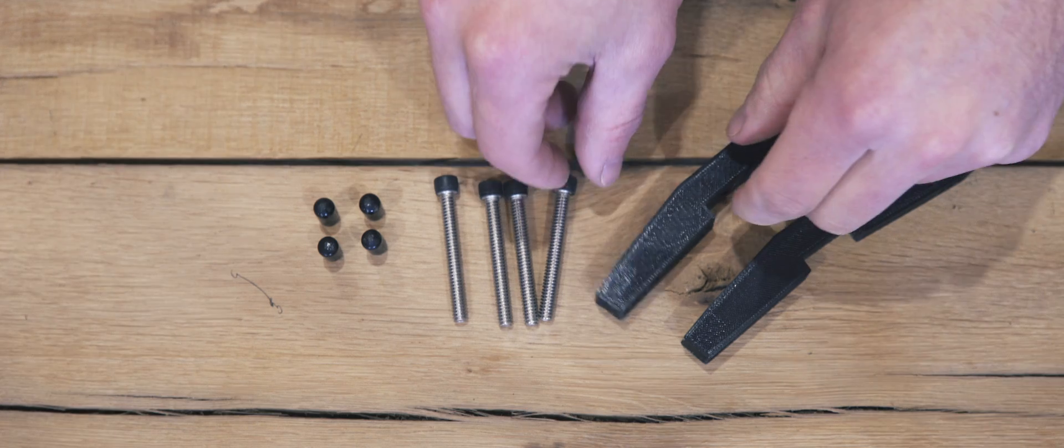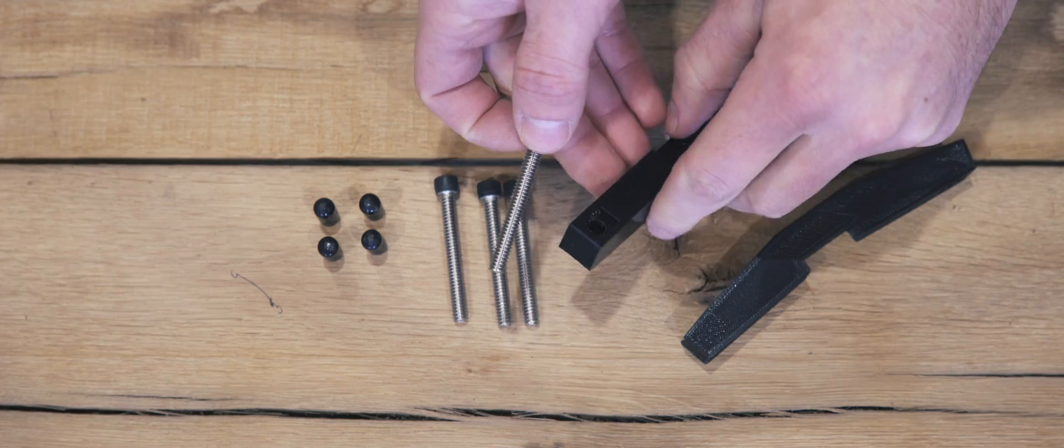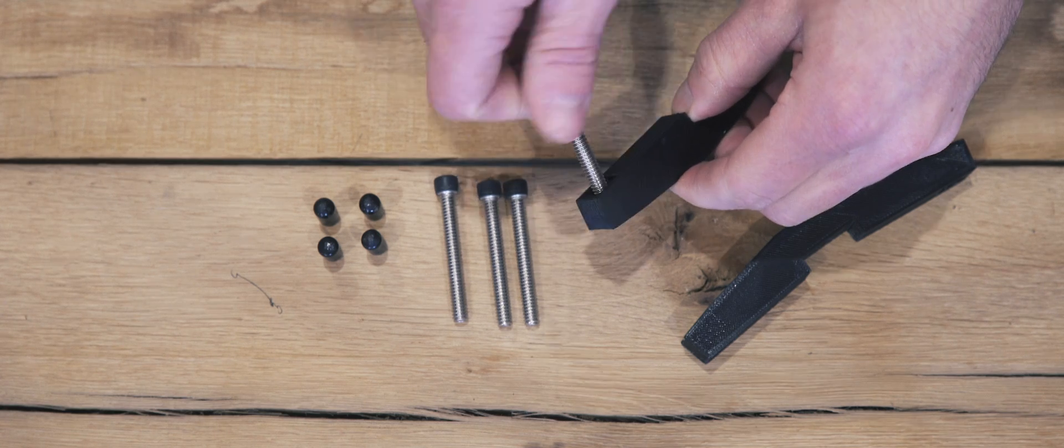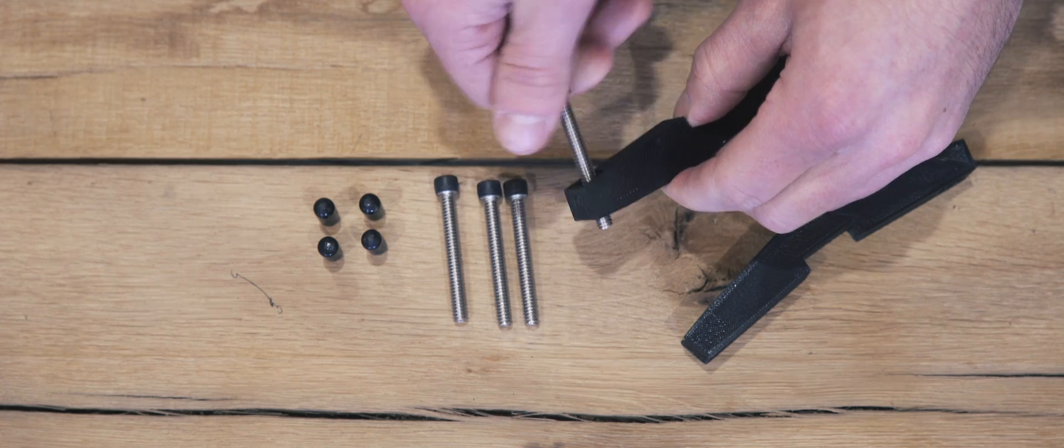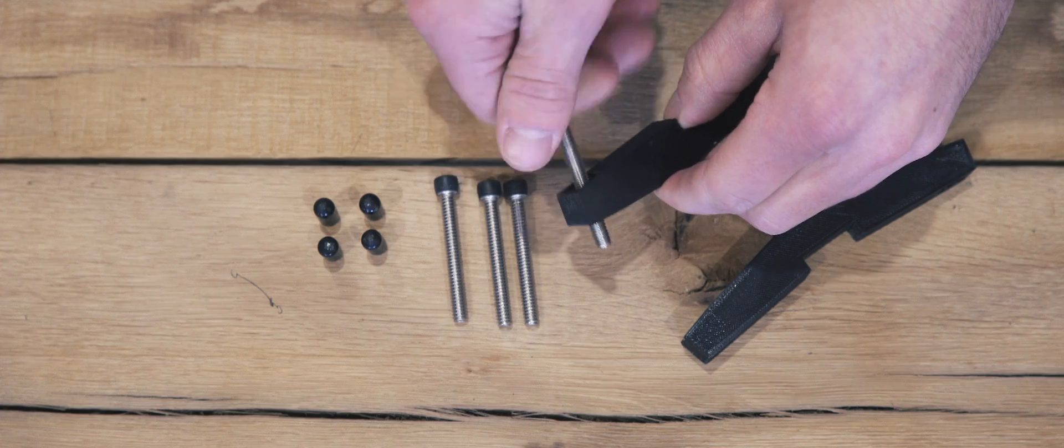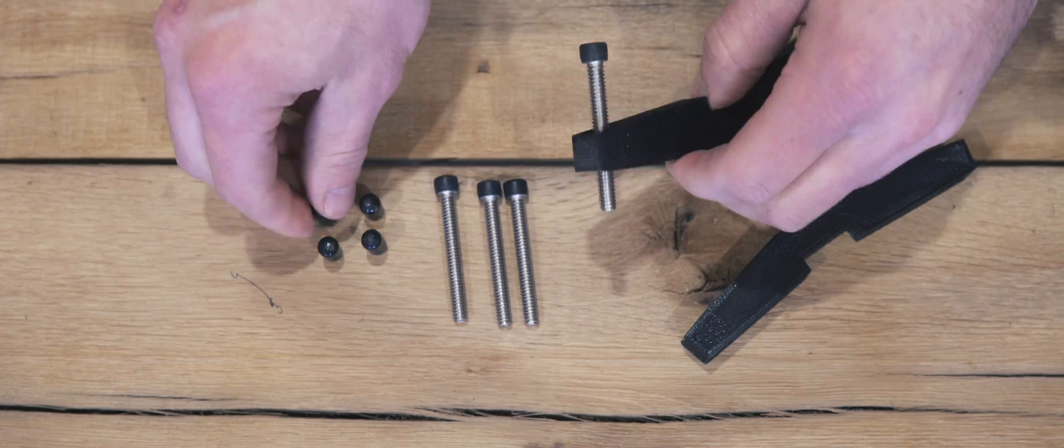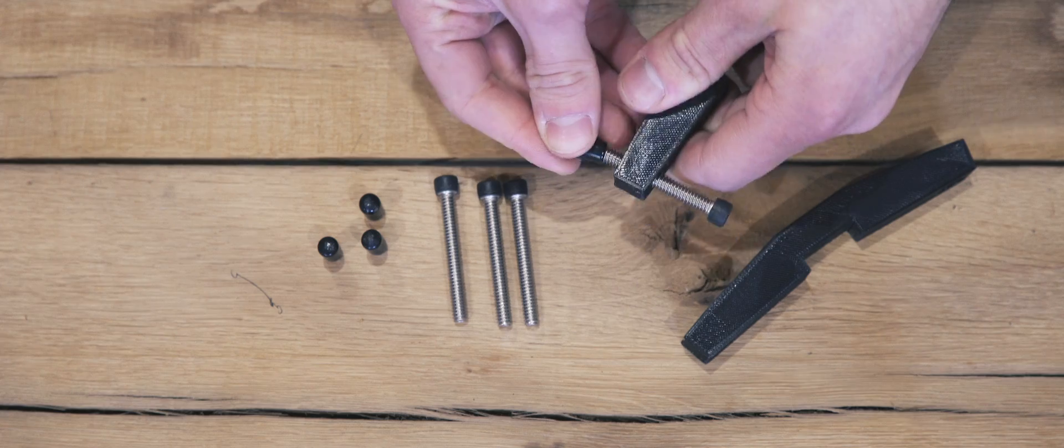So now we can go back and assemble our legs and feet. Thread the feet through the legs, and attach the rubber caps onto the bottom of the feet. I got these at widgetco.com.